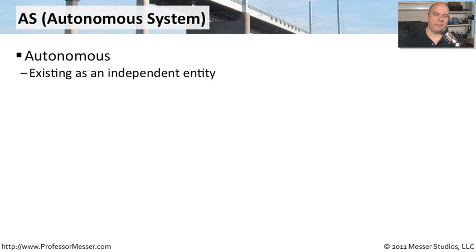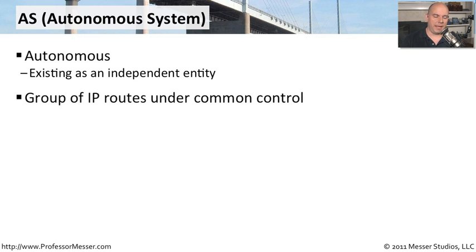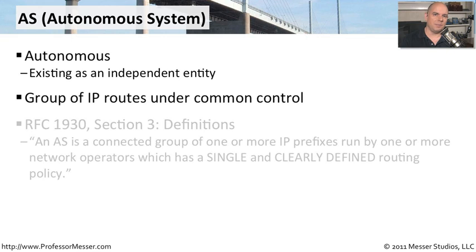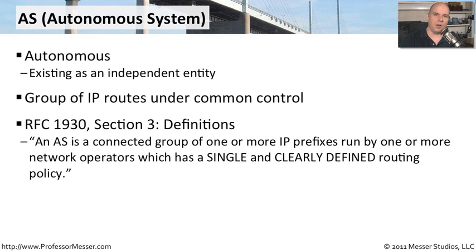When you look at the concepts of an IGP and an EGP, you need to understand the idea of an autonomous system, often written as an AS. An autonomous system is one that is independent — generally a group of devices that are under our control. If we have some routers or IP routes that we are managing, we consider all of those routes as one single autonomous system for our organization.